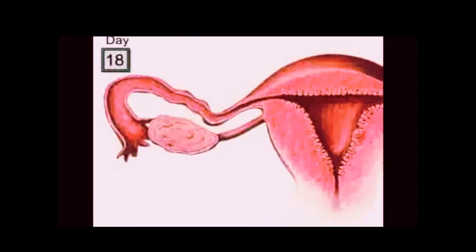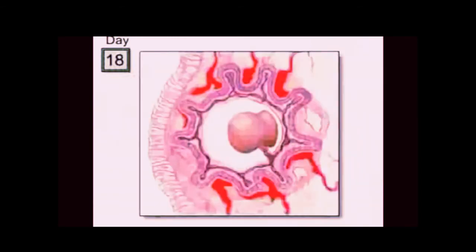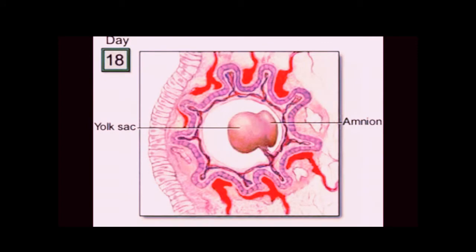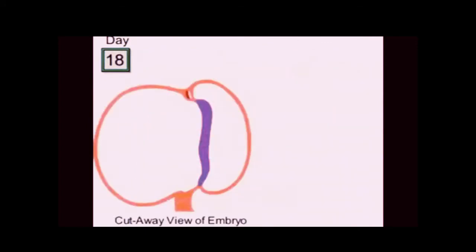Let's go back to 18 days after conception. Looking in the mother's uterus, you can see the embryo surrounded by its yolk sac and amniac. Here's a diagram of the embryo seen from a side view. Right now it's about the size of a raisin. There's the head region, and that red-colored area slightly above it contains two tubes that will form the embryo's heart.